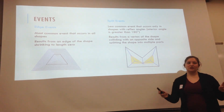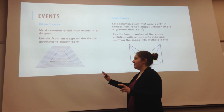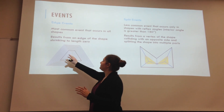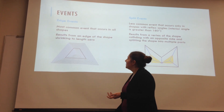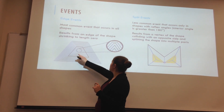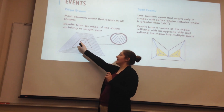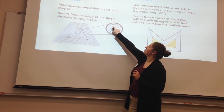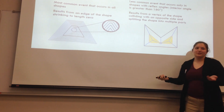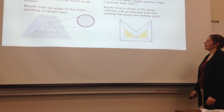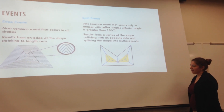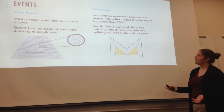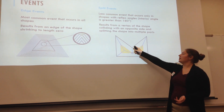There are two different types of events. The first and most common is the edge event, which occurs in any shape. An edge event occurs when a side disappears as the shape shrinks — so if this side right here disappears, that's an edge event. It's aptly called an edge event because the edge is disappearing.